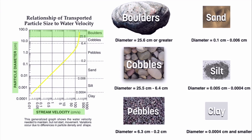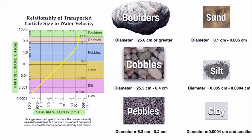Boulders are 25.6 centimeters or larger, and a stream would need to be moving about 200 centimeters per second to carry the smallest boulder. Cobbles are between 6.4 centimeters and 25.5 centimeters. Pebbles are between 0.2 and 6.3 centimeters. Sand is between 0.006 and 0.1 centimeters in diameter. Silt is between 0.0004 and 0.005 centimeters. And clay is the smallest particle possible.